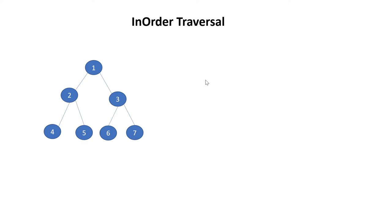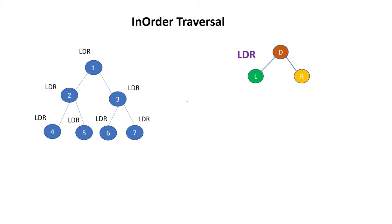Hello everyone, welcome to my channel. Today we will discuss inorder traversal of a tree. Inorder traversal means we have to follow the rule of LDR — first the left node, then the parent node, then the right side node. For a safer side, what we can do is denote each and every node as LDR, then we will start from the root node.